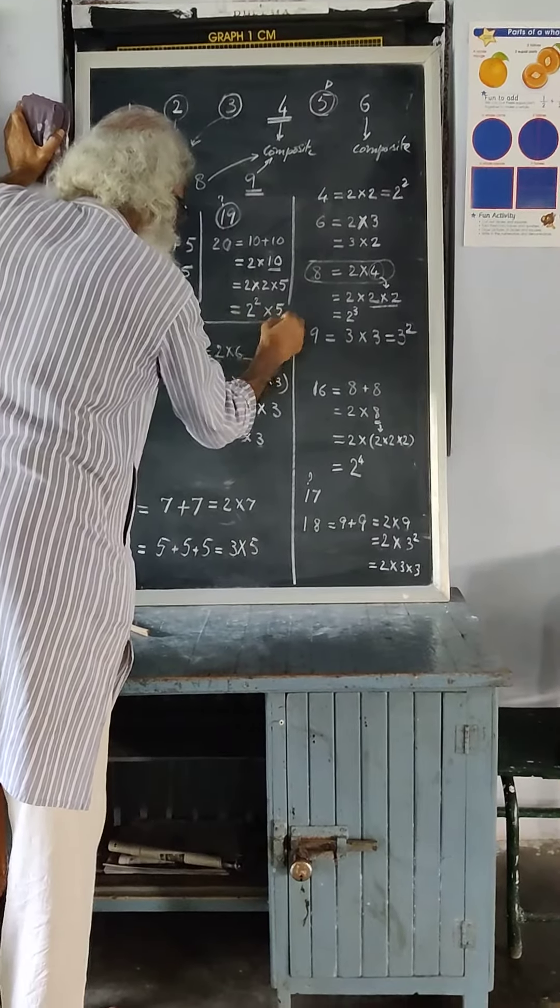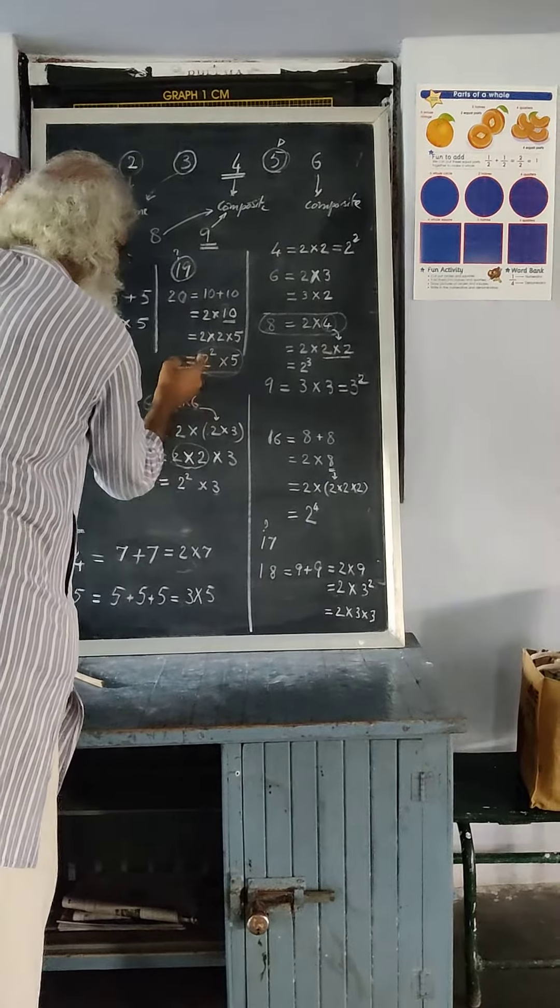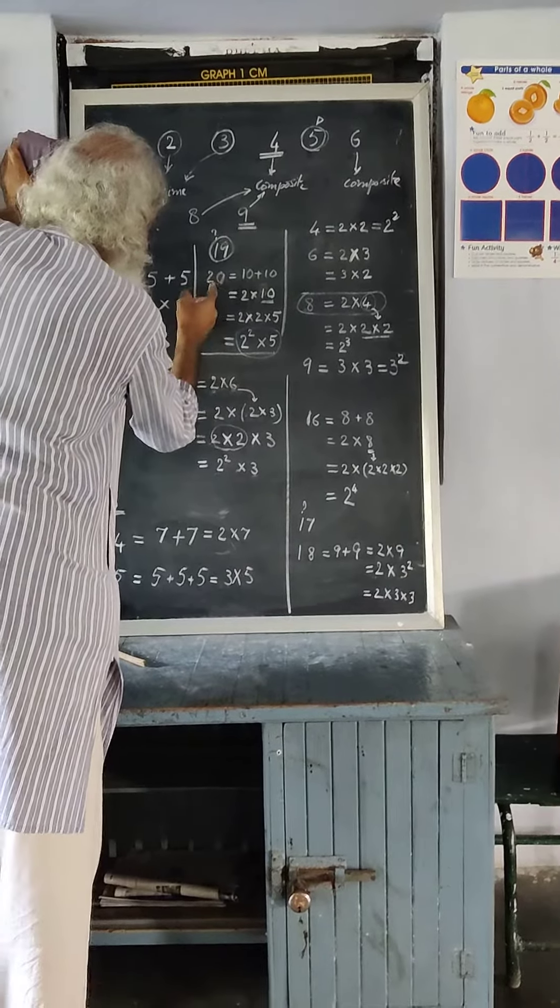2 squared times 5 is the prime factorization of 20.